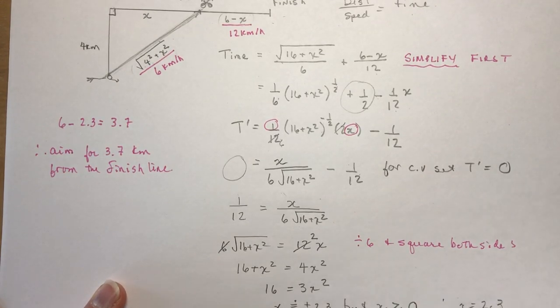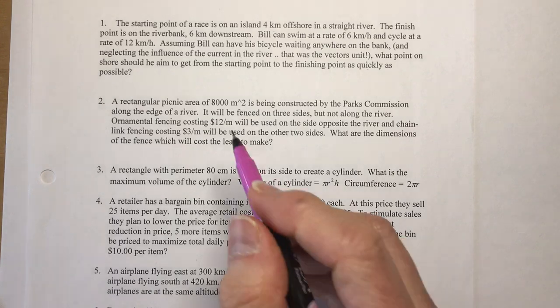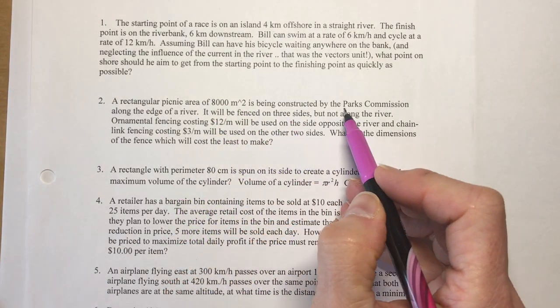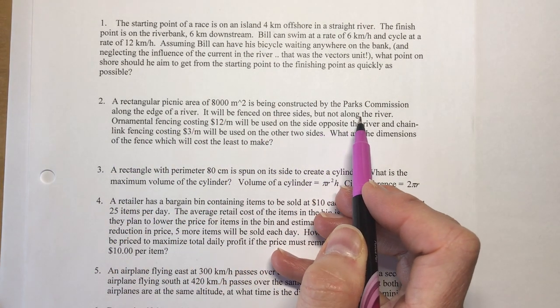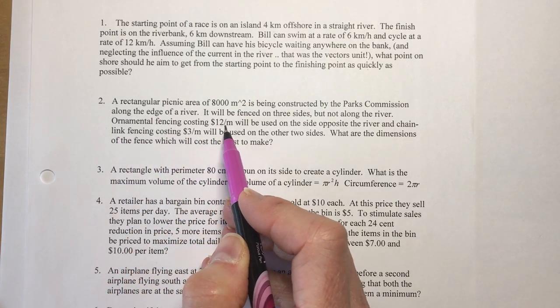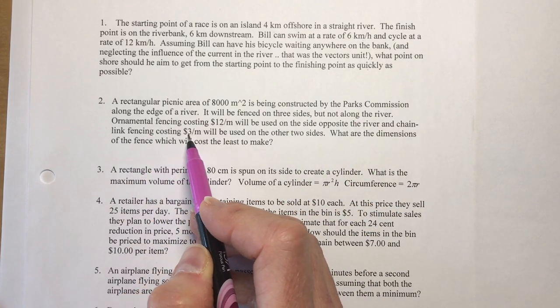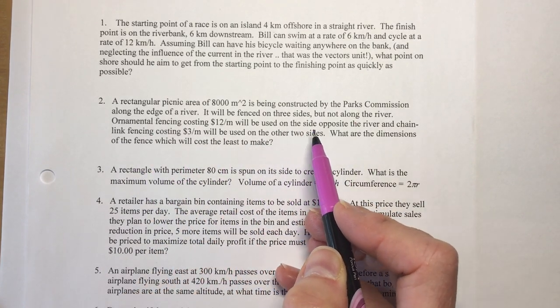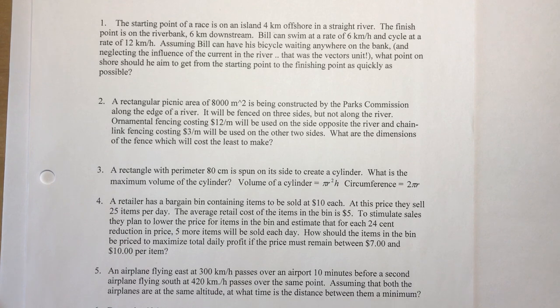Let's move on to number two and then I'm going to give my voice a little break and maybe have a cup of tea and try to get me in shape to do some more for you. Number two says a rectangular picnic area of 8,000 meters squared is being constructed by the parks commission along the edge of a river. It will be fenced on three sides but not along the river. Ornamental fencing costs $12 per meter will be used on the side opposite the river and chain link fence costing $3 per meter will be used on the other two sides. What are the dimensions of the fence which will cost the least to make?